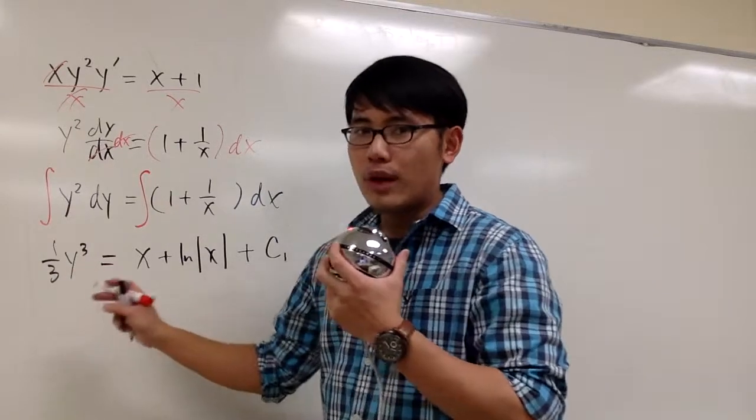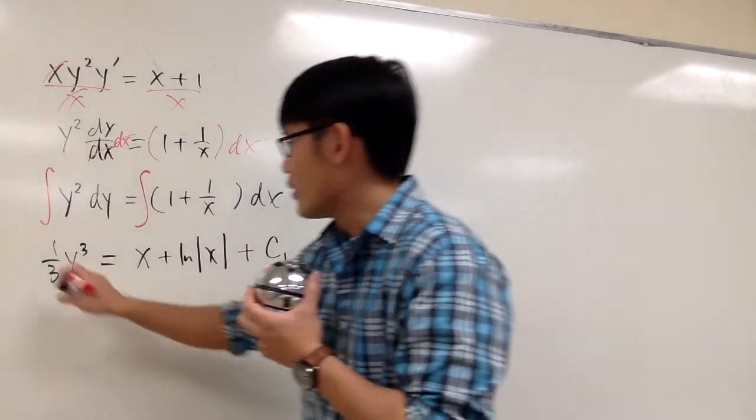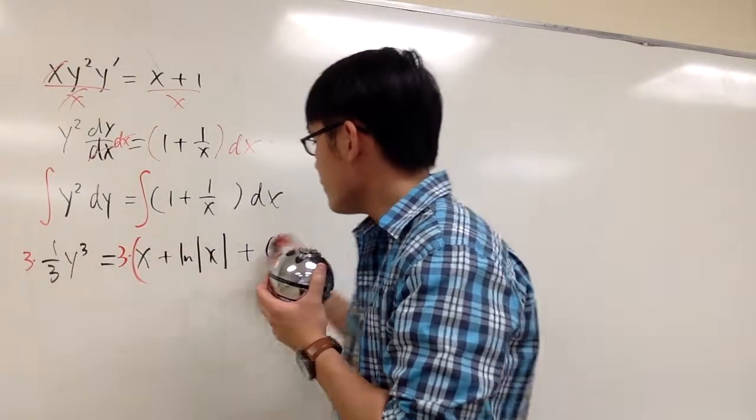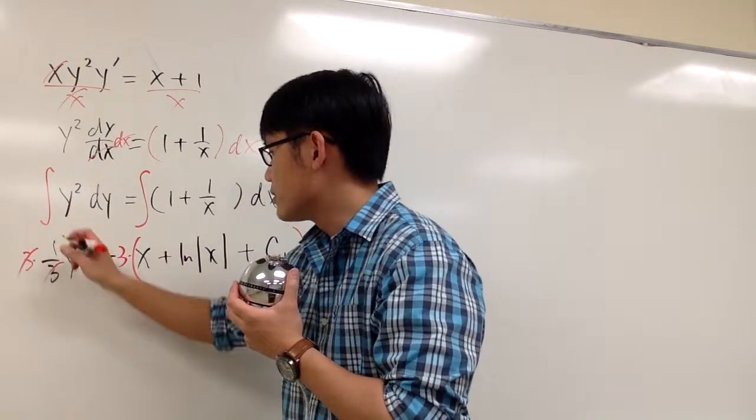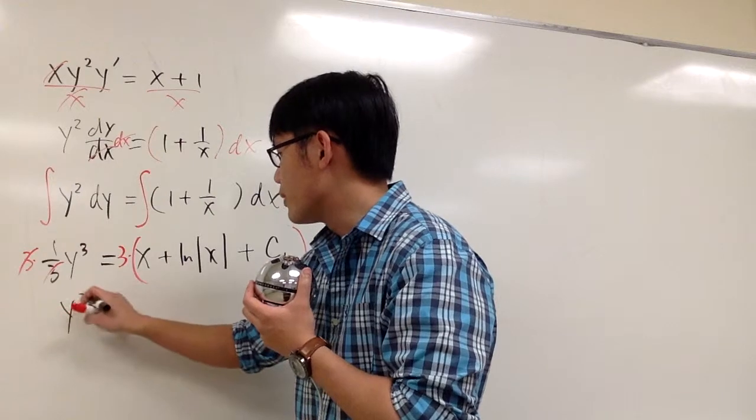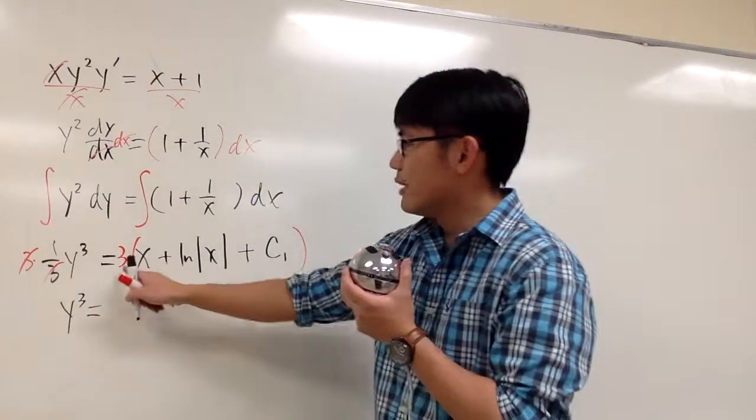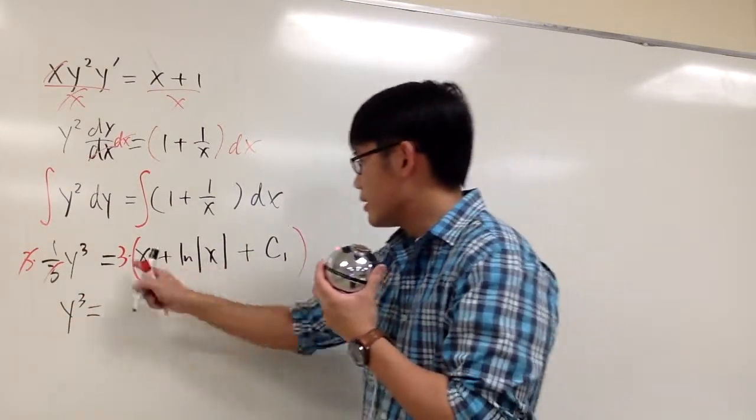I will try to isolate y whenever we can, so let's multiply everything by 3. This way, the 3 cancels, and it looks like we have y to the third power equals distribute 3 into all the terms inside.